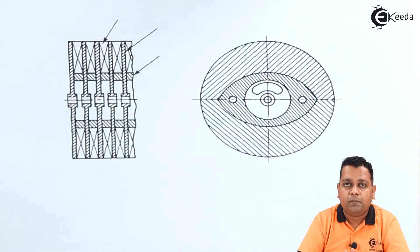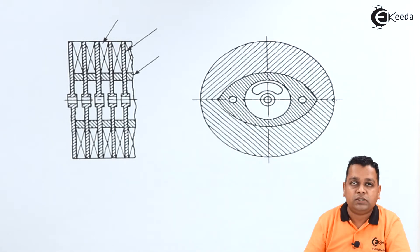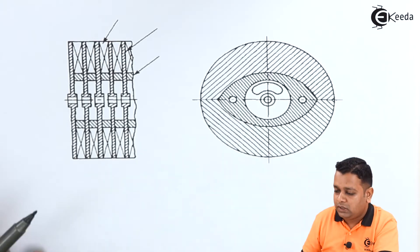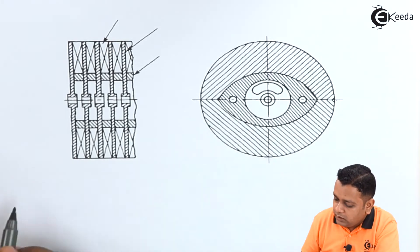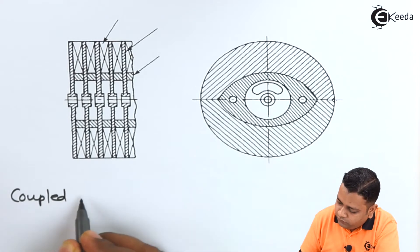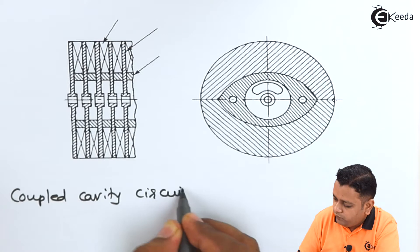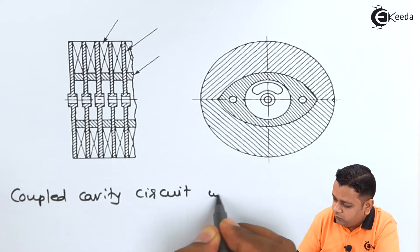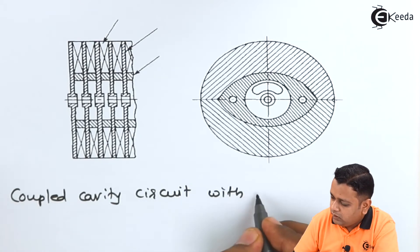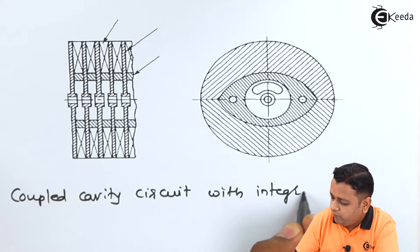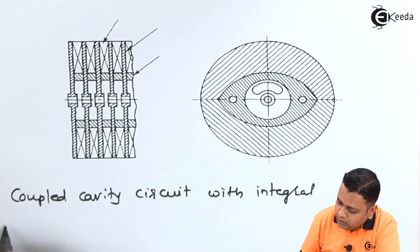After seeing the basic circuitry for the coupled cavity traveling wave tube, we have a second circuitry. The name of this particular circuitry is the coupled cavity circuit with integral periodic permanent magnets.